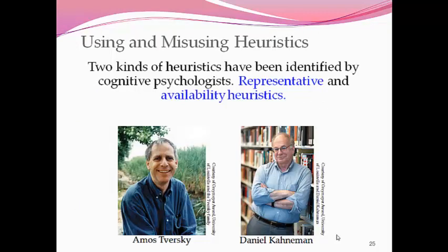Using and misusing heuristics. Remember, heuristics are a cognitive shortcut to problem solving. There are really two kinds that have been identified by cognitive psychologists: representative heuristics and availability heuristics.